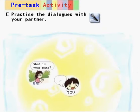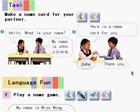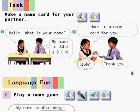Pre-task activity. E. Practice the dialogues with your partner. Task: Make a name card for your partner. Hello! What is your name? My name is John. J-O-H-N. Here is a name card for you. Thank you!